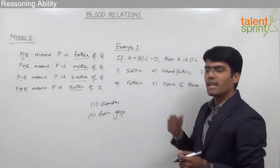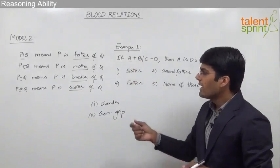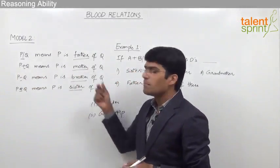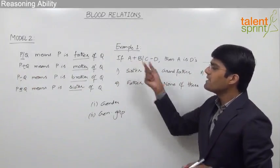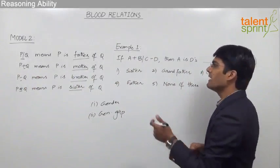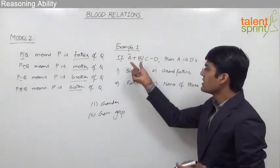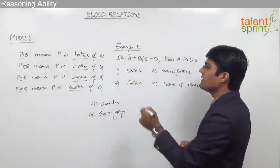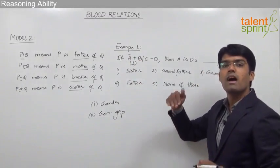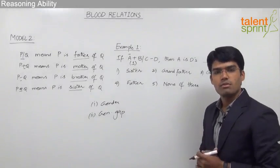If we take the relationship between A and B, we see A plus B, and from the given notation we know that plus means mother. So, very clearly A is the mother of B. If A is the mother of B, we can say that the gender of A is female, and the generation gap between A and B should be one, since A is in the higher level.